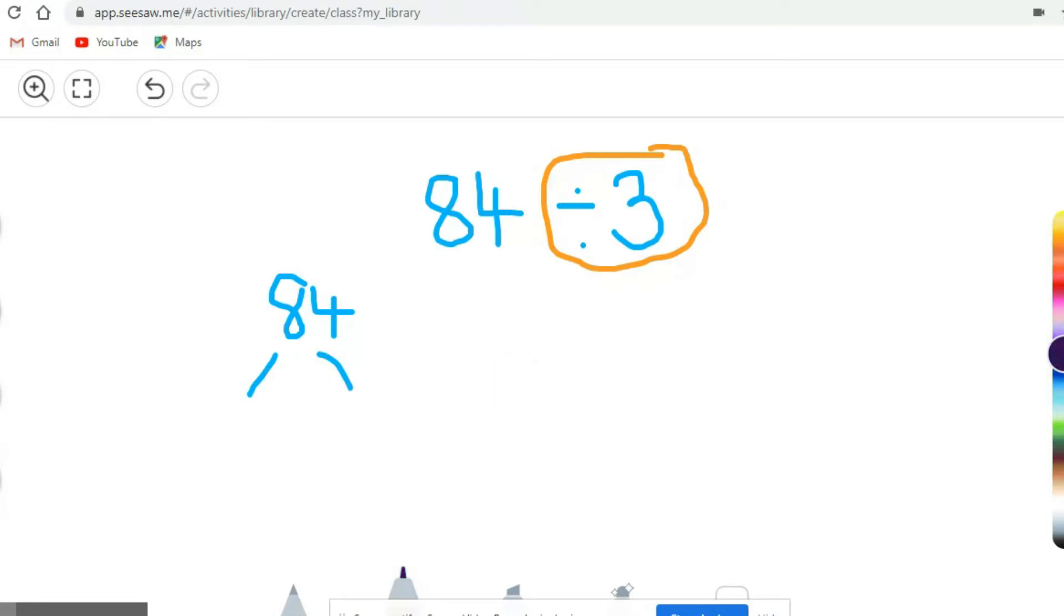So hopefully you know your 3 times table really well. So if I partition 84, I can partition it the usual way, which would be 80 and 4. But are those numbers in the 3 times table? Well, I know that 4 isn't in the 3 times table, because I can have one group of 3, but then I've got one remainder. So 4 isn't in the 3 times table. So that way wouldn't work, so I need a different way.